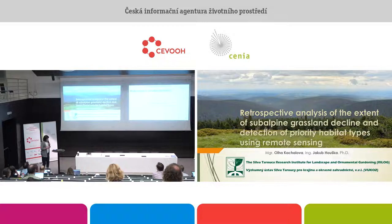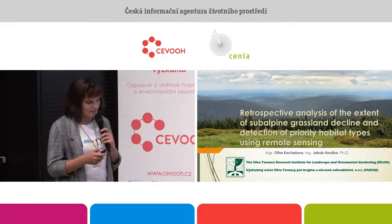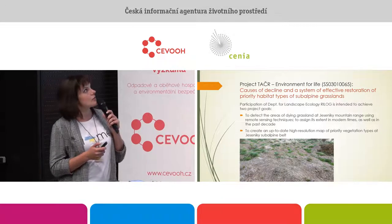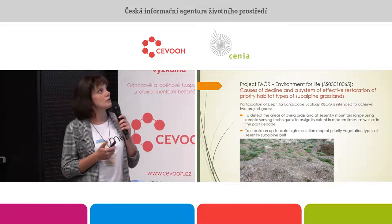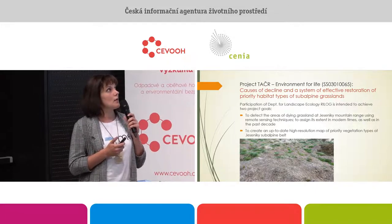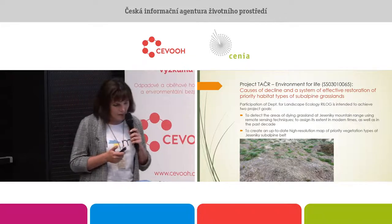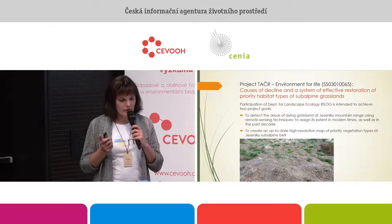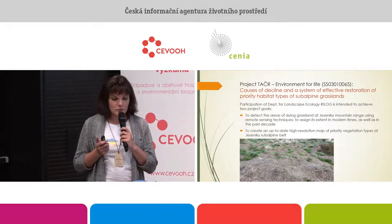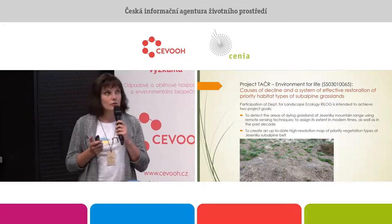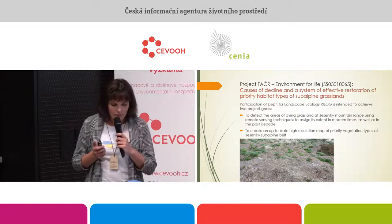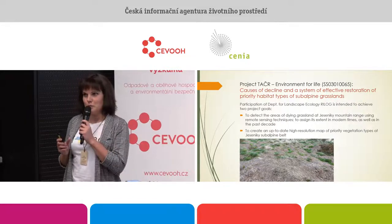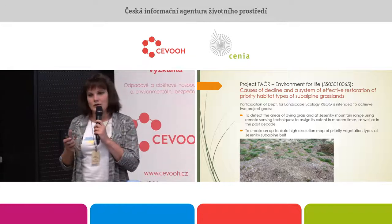Dear colleagues, I would like to present some results we obtained in the frame of a project called 'Causes of Decline and a System of Effective Restoration of Priority Habitat Types of Subalpine Grasslands.' One of the main goals of this project is to study the cause of sudden grassland dying events at subalpine ranch in Jeseníky Mountains, observed during the last decade. Our contribution — our small remote sensing group, part of the Department for Landscape Ecology of WUKUS — is to address two main tasks.